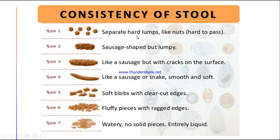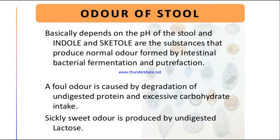Regarding consistency, using the Bristol Stool Chart: Type 1 is separate hard lumps like nuts, hard to pass, seen in constipation. Type 2 is sausage-shaped but lumpy. Type 3 is sausage-shaped with cracks on the surface. Type 4 is smooth and soft like a sausage or snake. Type 5 is soft blocks with clear-cut edges. Type 6 is fluffy pieces with ragged edges. Type 7 is entirely liquid, seen in diarrhea.